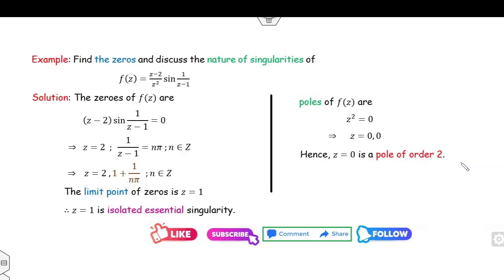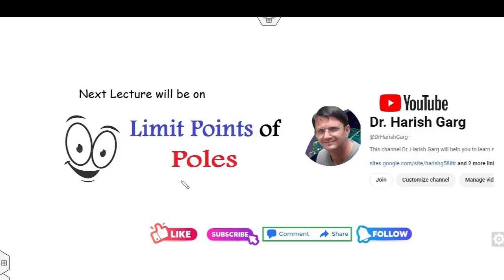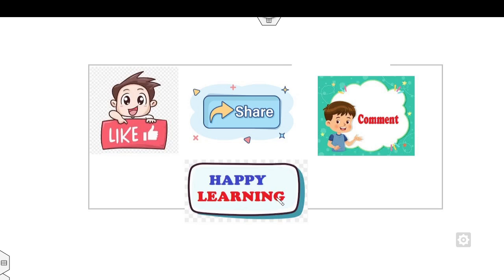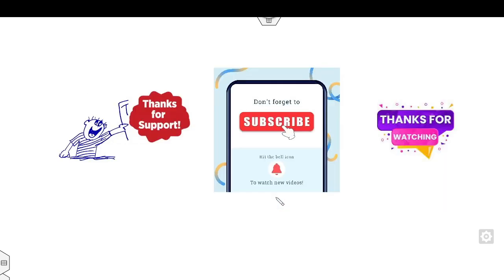So we have discussed limit points of zeros and isolated essential singularities. In the next lecture we will discuss how you can check whether a point is a non-isolated singularity, for which we will discuss the concept of limit points of poles. You can watch the previous lectures. Share, like, and comment on these videos. Happy learning always — don't forget to subscribe my YouTube channel. Best of luck students, thanks for watching.